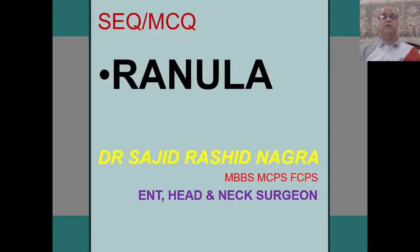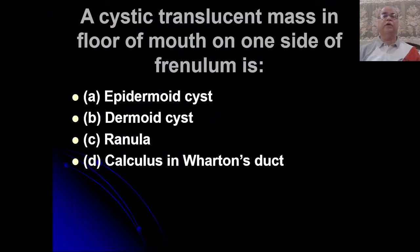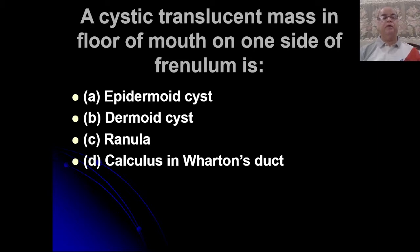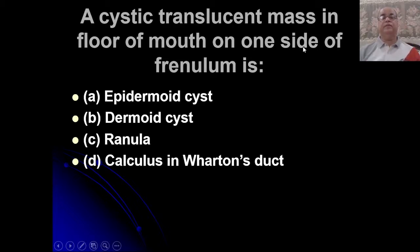The first multiple choice question regarding ranula: a cystic translucent mass in the floor of the mouth on one side of the frenulum. Options are: epidermoid cyst, dermoid cyst, ranula, or calculus in Wharton's duct. As we know, dermoid cyst always occurs in the midline, but here the cystic translucent mass is away from the midline, so it cannot be a dermoid cyst.